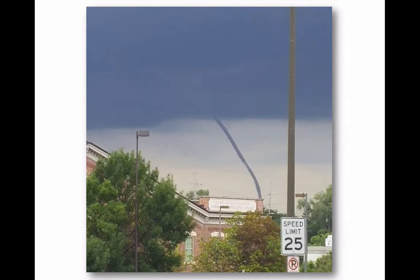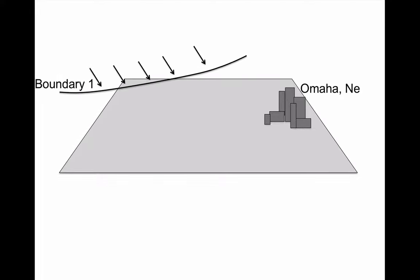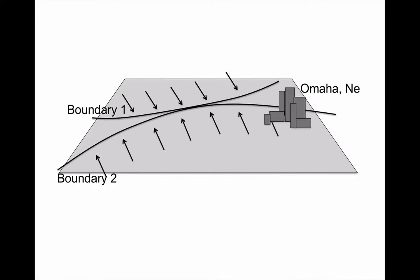I want to talk about tornado genesis — how tornadoes form — from two different perspectives. Here's a waterspout, a picture I took in Omaha, Nebraska. A waterspout is a little vortex, a little rotation in the atmosphere that formed over water. If it formed over land, we call it a land spout. We had two boundaries colliding: one from the northwest, one from the southeast. That was the trigger, which led to development of a thunderstorm that produced a tornado — but not a supercell-type tornado.